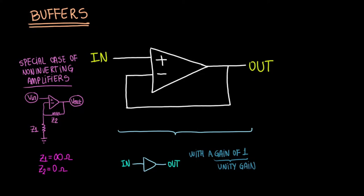The benefit of buffers is found in the impedance values. Zin, the input impedance, equals infinity and Zout, the output impedance, equals 0, which protects the input signals from being affected by the load.